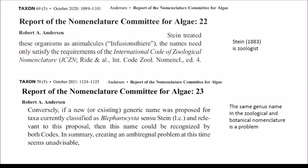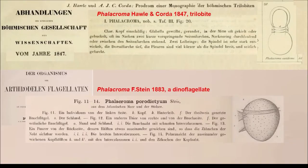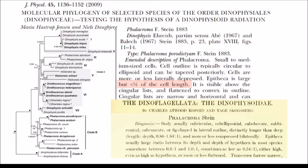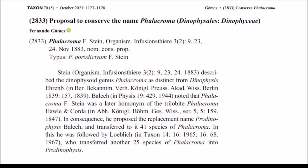But this is a minor problem, because we have other cases like Falachroma. Falachroma is an animal — it's a trilobite — and we also have a posterior Falachroma by Stein as a dinoflagellate. There is no problem: we use Falachroma in the botanical nomenclature and it is not a major problem.